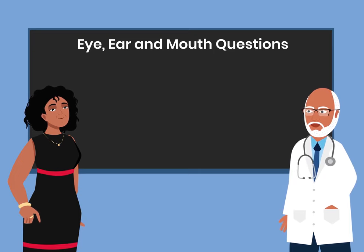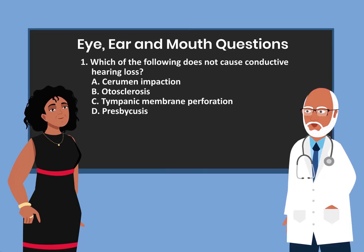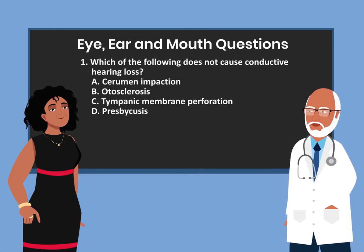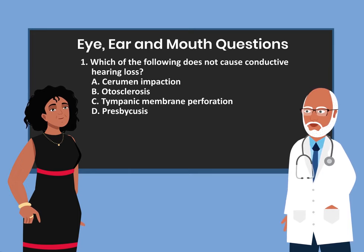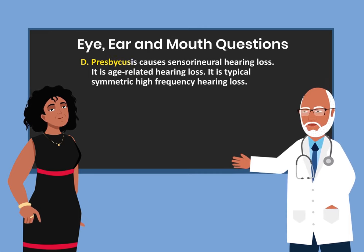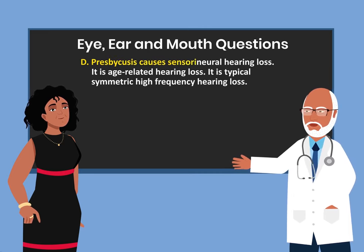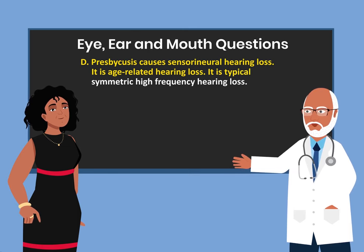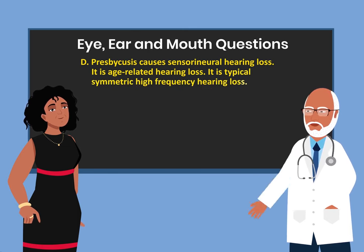Question 1. Which of the following does not cause conductive hearing loss? A. Cerumen impaction. B. Otosclerosis. C. Tympanic membrane perforation. D. Presbycusis. The answer is D. Presbycusis causes sensorineural hearing loss. It is age-related hearing loss. It is typically symmetric, high-frequency hearing loss.